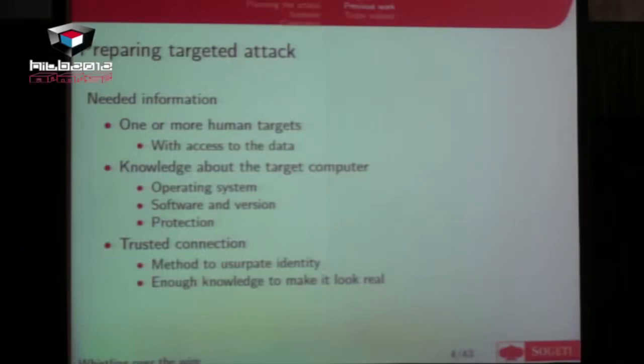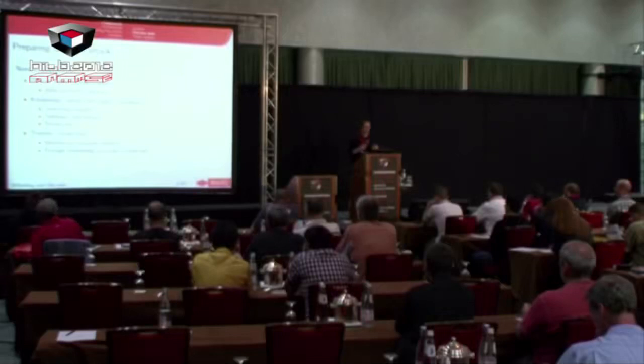I will look for one or more humans — often the one with access to the data, because when we have access to their computer we already have the same privileges as the target and can access the data we're looking for. That's why I spend time choosing the right target. Then I will look for more information to be able to exploit them, and we will also often need information about the target's connections. What we may do is send a document using an email coming from someone the target knows.